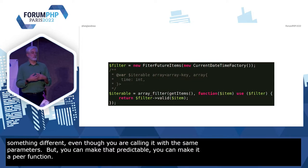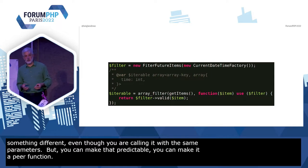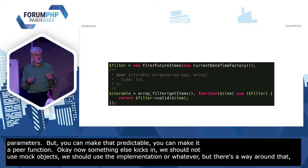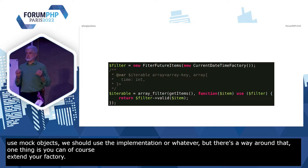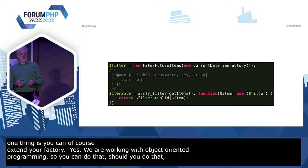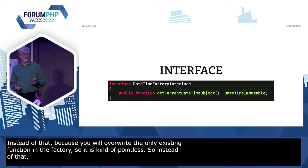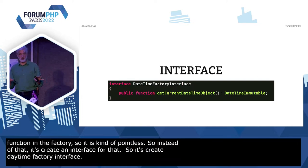We shouldn't use mock objects — we should use the implementations. You can extend your factory. Yes, we are working with object-oriented programming, so you can do that. Should you? Perhaps not, because you will override the only existing function within that factory, so it's kind of pointless. Instead of that, let's create an interface for that. So let's create a DateTimeFactory interface. Whether you name that with 'interface' at the end or not is a different question.